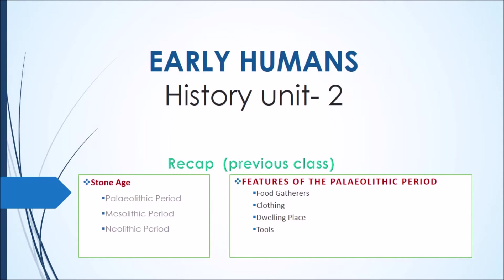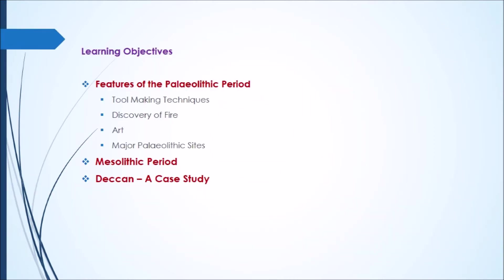The Stone Age can be divided into three periods based on the quality of stones they used. They are the Paleolithic period, Mesolithic period, and Neolithic period. In the previous session we studied about some of the features of the Paleolithic period — how they gathered food, their clothing, shelter, and the tools they used.